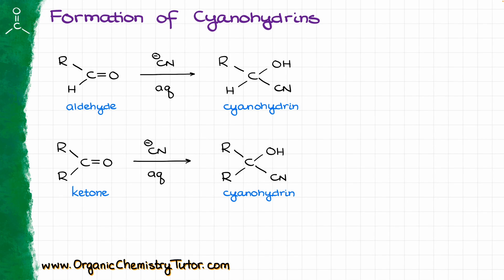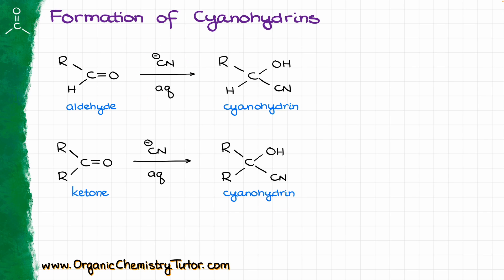Formation of cyanohydrins from aldehydes and ketones is probably one of the first reactions we introduce in the carbonyls chapter. This is a reaction between a carbonyl — like an aldehyde or a ketone — which gives you a corresponding cyanohydrin after it reacts with a cyanide anion. The cyanohydrin is the combination of a nitrile and an alcohol OH, both sitting on the same carbon of a molecule.